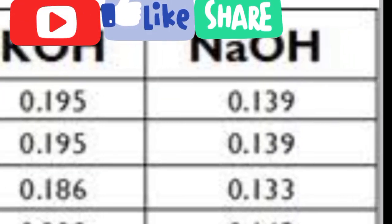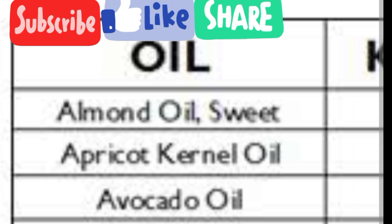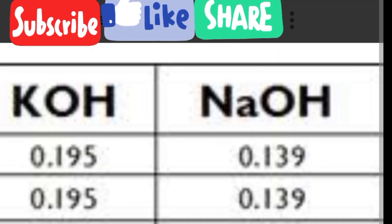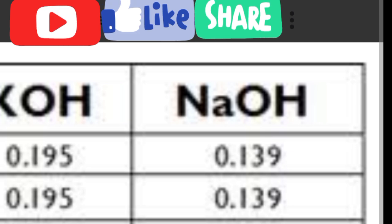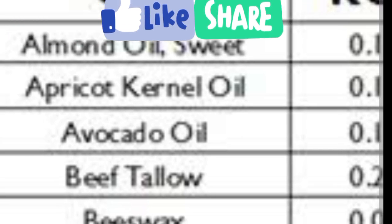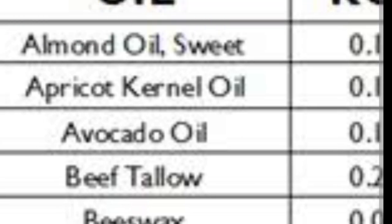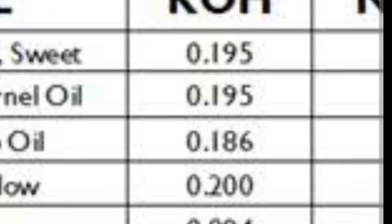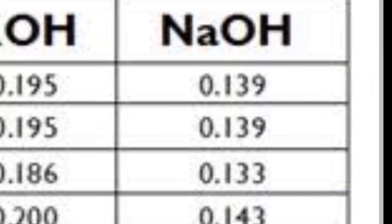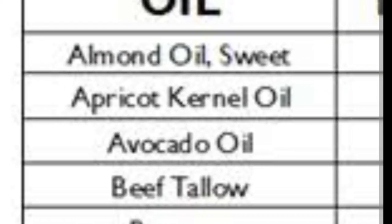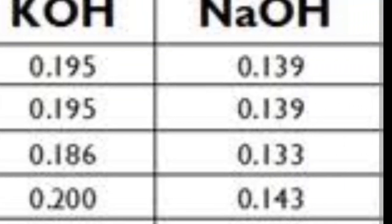Different oils have different values. Look: apricot oil and almond oil have the same value, but avocado oil has a different value. As long as you want to use the saponification value method, you need to come to these charts, find the oil you want to use, and get its saponification value. This is beef tallow right here — and I'm making a solid soap, so I come here to find how many kg of caustic soda I need to fully saponify one kg of beef tallow: I need 0.143.